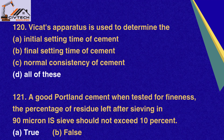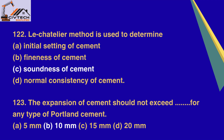Question 121. A good Portland cement when tested for fineness — the percentage of residue left after sieving in a 90-micron sieve should not exceed 10%. A. True, B. False. Correct option A: True. Question 122. Le Chatelier method is used to determine: A. Initial setting of cement, B. Fineness of cement, C. Soundness of cement, D. Normal consistency. Correct option C: Soundness of cement. Question 123. The expansion of cement should not exceed for any type of Portland cement: A. 5 mm, B. 10 mm, C. 15 mm, D. 20 mm. Correct option B: 10 mm.